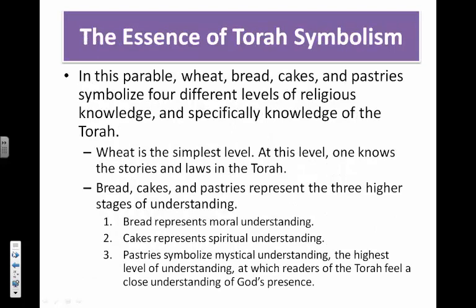In this parable, wheat, bread, cakes, and pastries symbolize four different levels of religious knowledge — specifically knowledge of the Torah. Symbolically speaking, wheat is the simplest level of faith; at this level, one knows the stories and laws in the Torah, just basic understanding. Bread represents moral understanding. Cakes represent spiritual understanding. And pastries symbolize mystical understanding — the highest level, at which readers of the Torah feel a close understanding of God's presence.